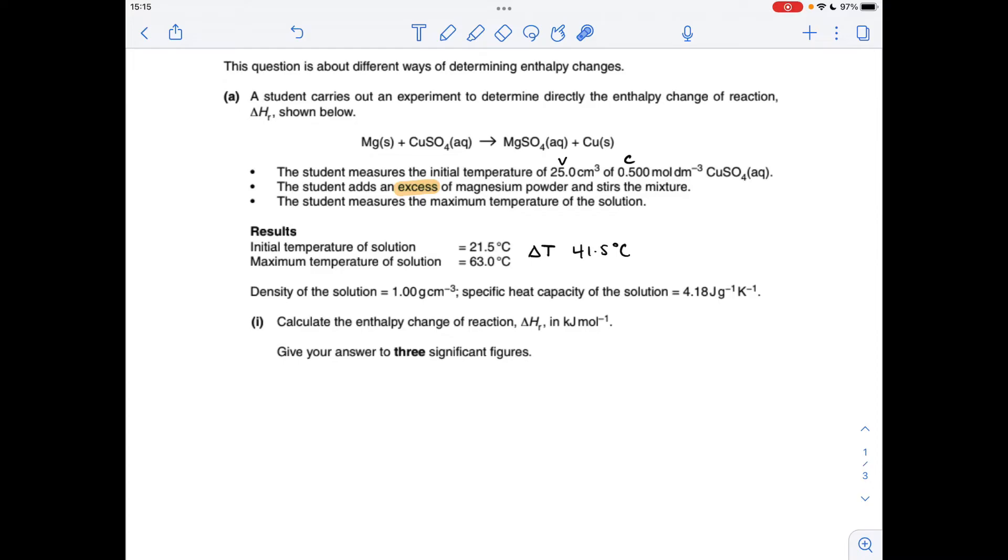Okay, so I'll just go through the annotations I've made and then we'll get into the calculation for part A. We've got magnesium reacting with copper sulfate solution. We're told the volume and concentration of the copper sulfate solution, and we're told that the magnesium is in excess, so obviously the copper sulfate is the limiting reagent. We're also told the initial temperature of the solution and the maximum temperature it reaches. So obviously the difference between those is the delta T, the change in temperature, so it's 41.5 degrees C.